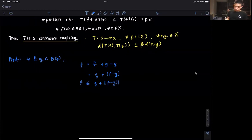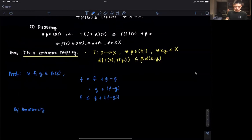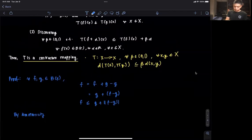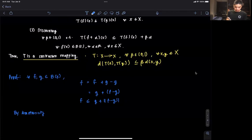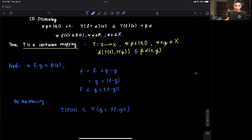Now by monotonicity, recall this particular form that we have here. Then T(f)(x) must be less than or equal to T(g plus the sup norm of f minus g).